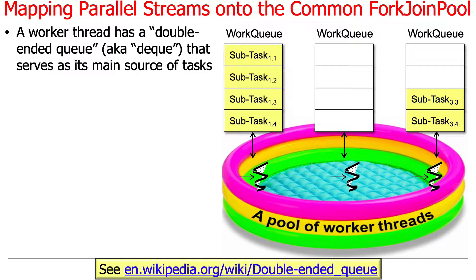The way this works internally — and we'll go into this in much more detail later — is that each worker thread has a so-called double-ended queue, also known as a deque. Deque stands for double-ended queue. That serves as its main source of tasks. Let's assume for the sake of argument that there are three threads in the pool of worker threads, which will be a function of how many cores you've got. So we'll have some threads in the pool, and each of the threads has its own deque, which is called a work queue. And each of the deques has a bunch of tasks — really subtasks — to work on.